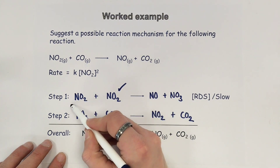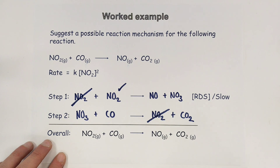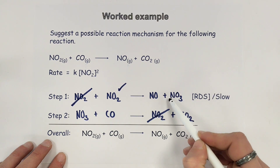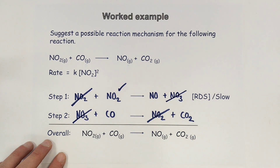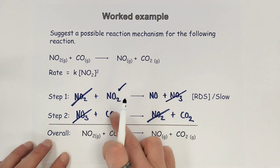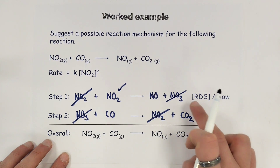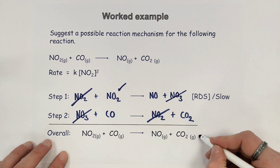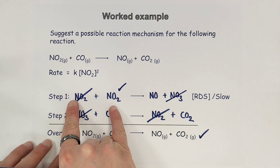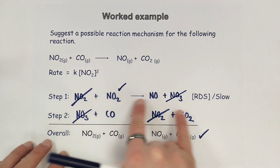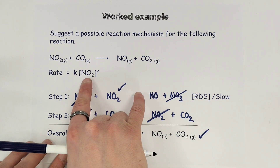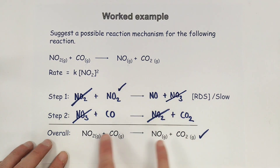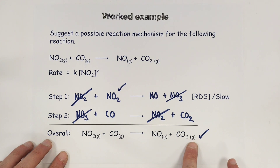I can cancel the NO2 and I can cancel the NO3, as it is used up at the start of step two. So what I'm left with overall is NO2 plus CO forming NO plus CO2. I've hit my two criteria: I had two moles of NO2 in my rate determining step which agrees with the rate equation, and through cancelling down across the two steps I have reached the overall equation required in the question.